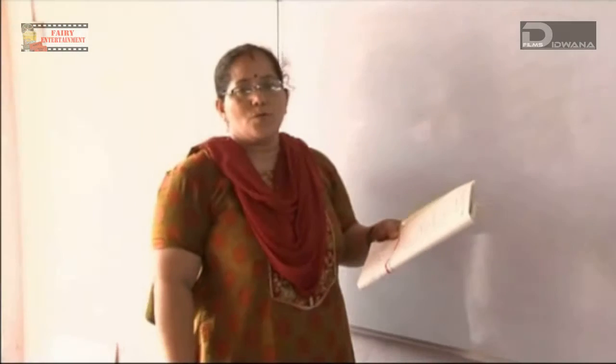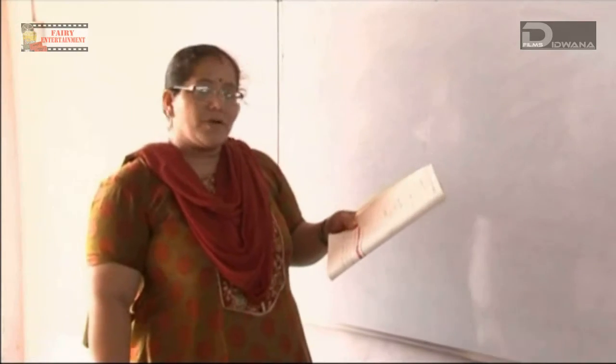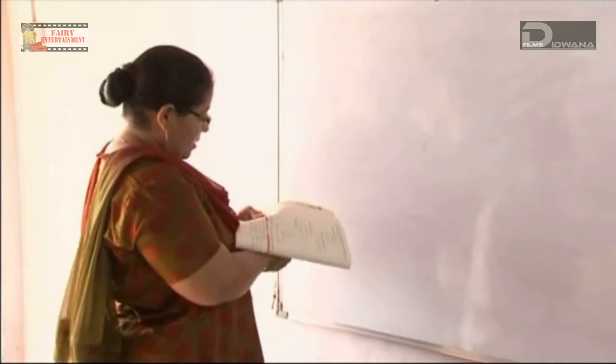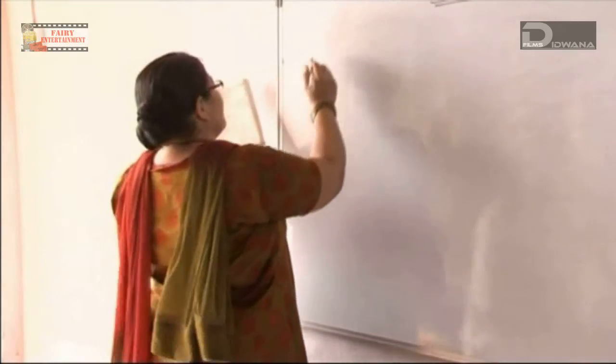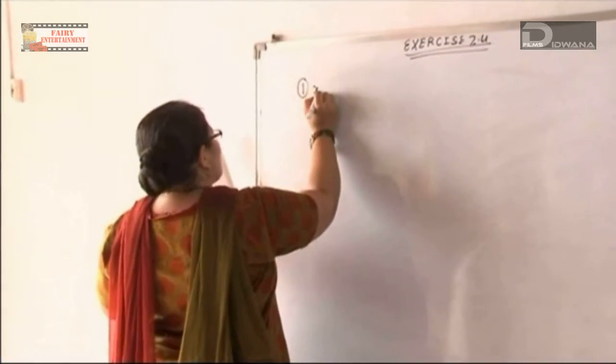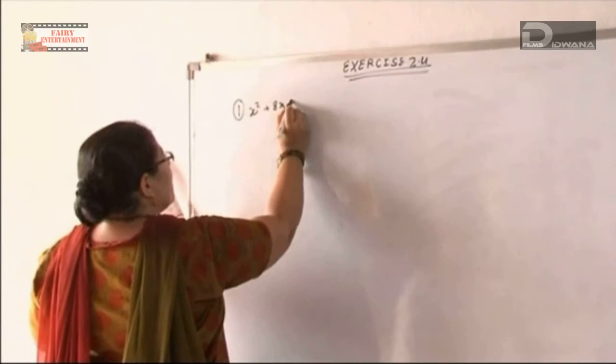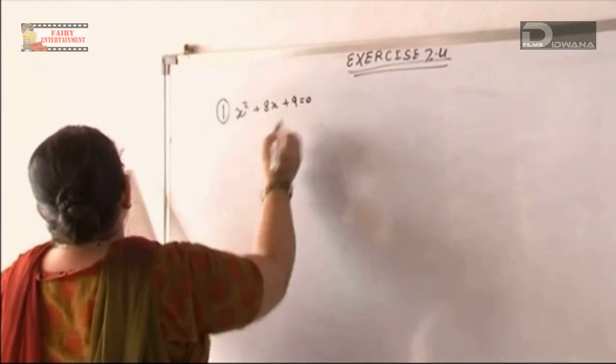Here we start with exercise 2.4, quadratic equations by completing the square. We take the first question. The first question is x² + 8x + 9 = 0.